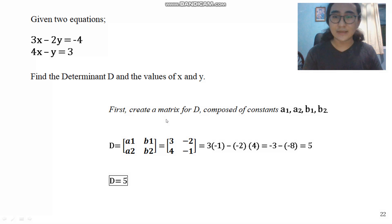How do we do that is we create a matrix D composed of a1, a2, b1, and b2. If you're wondering, where did this come from? a1 is this one, 3. And a2 is 4. b1 is negative 2. b2 is negative 1. There's a 1 right here. c1 is this one. And c2 is this one. Now that's clear.